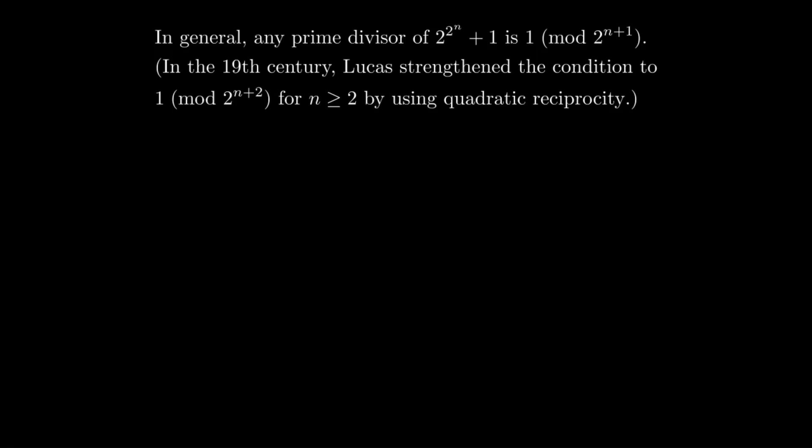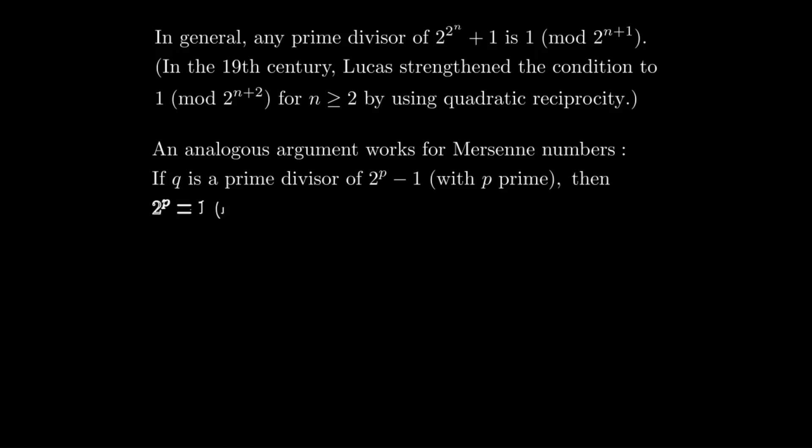And the same idea works for Mersenne numbers as well. If we take q to be a prime divisor of 2^p - 1, and remember, p is prime, so we can write 2^p congruent to 1 mod q. And so the order of 2 mod q must go evenly into p. But p is a prime, so the only factors of it are 1 and p. But the order cannot be 1. That would mean that 2 is already 1 mod q. That doesn't make sense. So the order must be p.